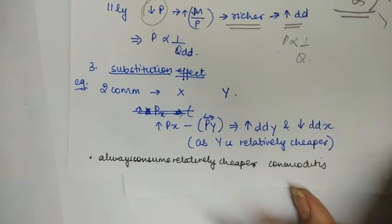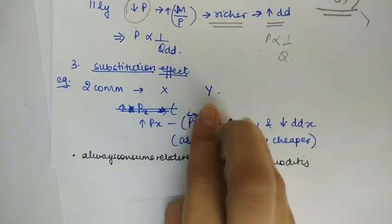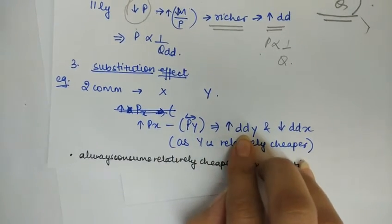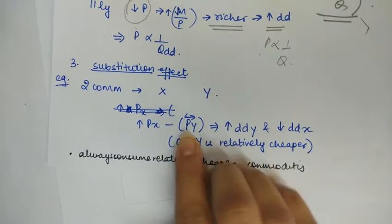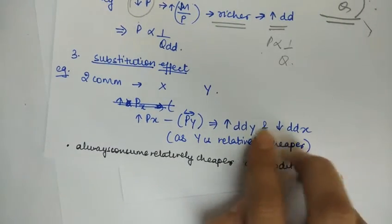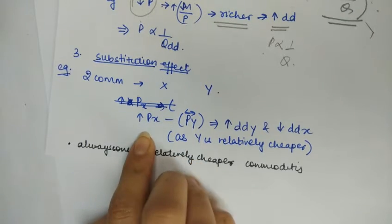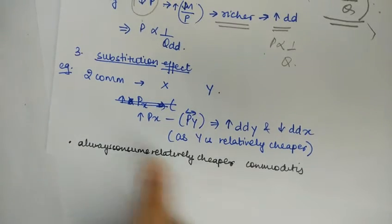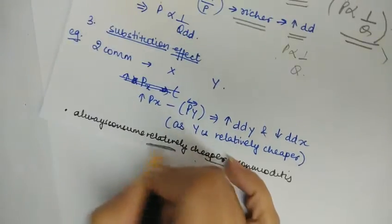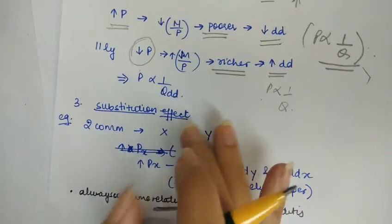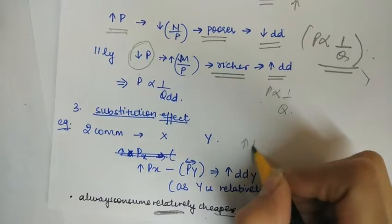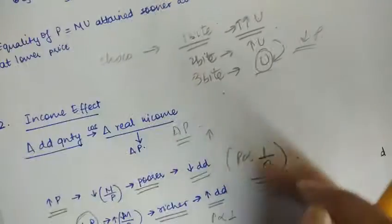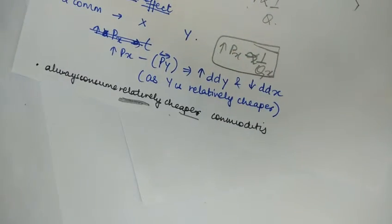The third reason is the substitution effect. If you have two commodities X and Y, with an increase in the price of X while the price of Y remains constant, the demand for Y will increase because Y has become relatively cheaper, and the demand for X will fall because it is relatively expensive. The consumer always consumes the relatively cheaper commodity, so with the increase in the price of X, the quantity demanded of X falls.